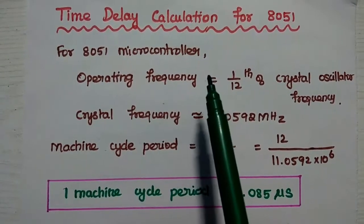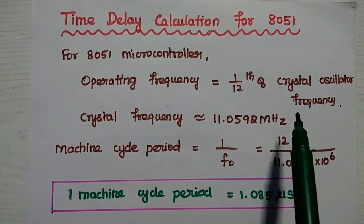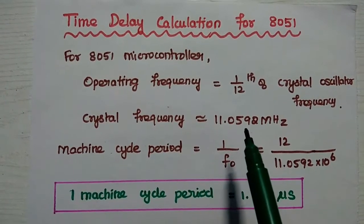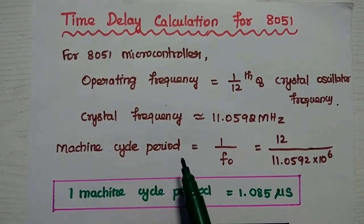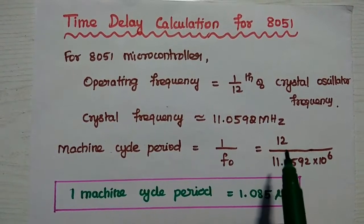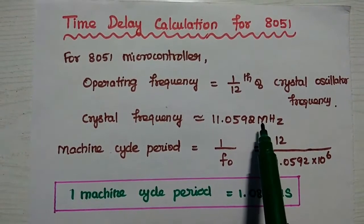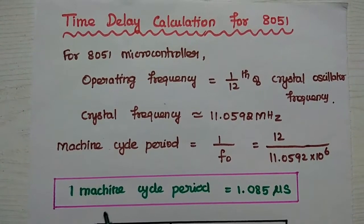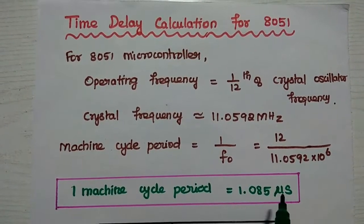For the AT89C51 microcontroller, the operating frequency is 1/12 of the crystal oscillator frequency. Here the crystal oscillator frequency is approximately 11.0592 MHz. From this we can find the machine cycle period. Its formula is 1 divided by operating frequency, equal to 12 divided by 11.0592 × 10⁶. So from this we get: 1 machine cycle period = 1.085 microseconds.